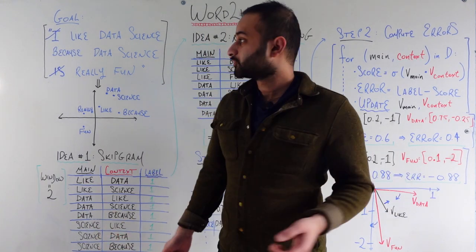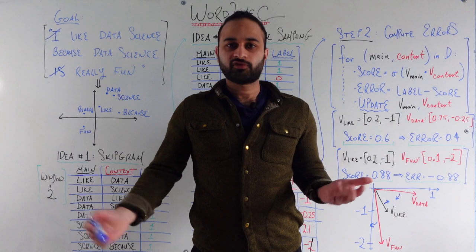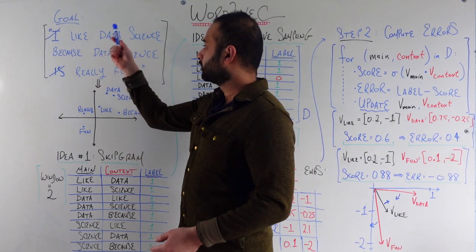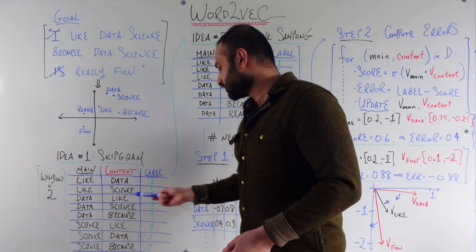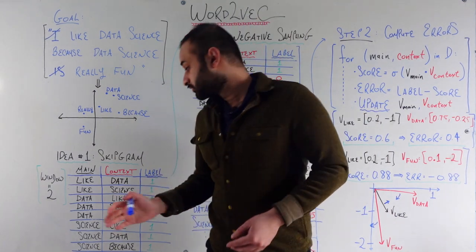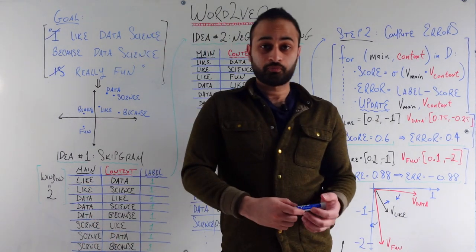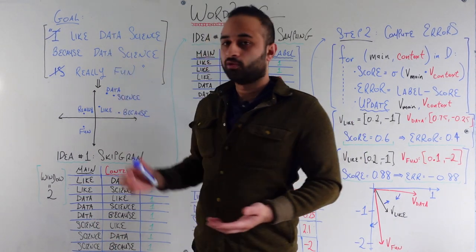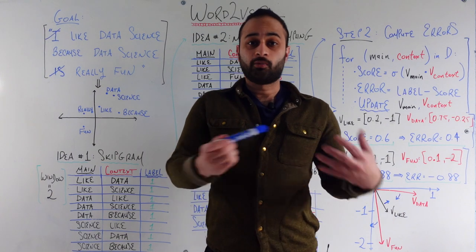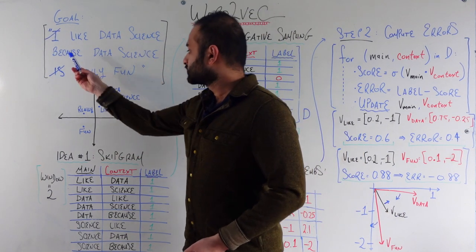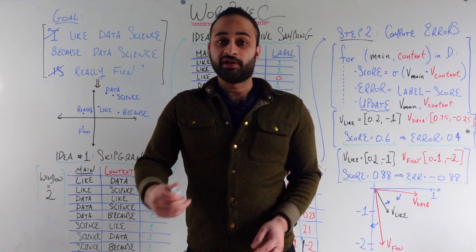Let's go through a couple of examples. The first word we'll look at is 'like'. Nobody is to its left, but the two words on its right are 'data' and 'science'. So the first two things we record are 'like-data' and 'like-science', both with a label of one — meaning this main word and context word do appear next to each other within a window size of 2. We can keep going and look at 'data': the word to its left is 'like', giving us 'data-like', and the two words to its right are 'science' and 'because', both with labels of one. We just keep going and construct this for the entire sentence or paragraph.